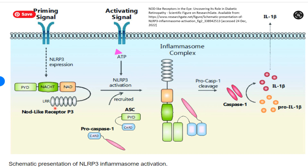In this diagram, we can see how the inflammasome complex is activated. For example, we have here the NOD-like receptor P3 (NLRP3) inflammasome. To activate the sensor part of this inflammasome, we need two signals: a priming signal and an activating signal. When the sensor part of NLRP3 is activated, an adaptor protein, ASC, is recruited.